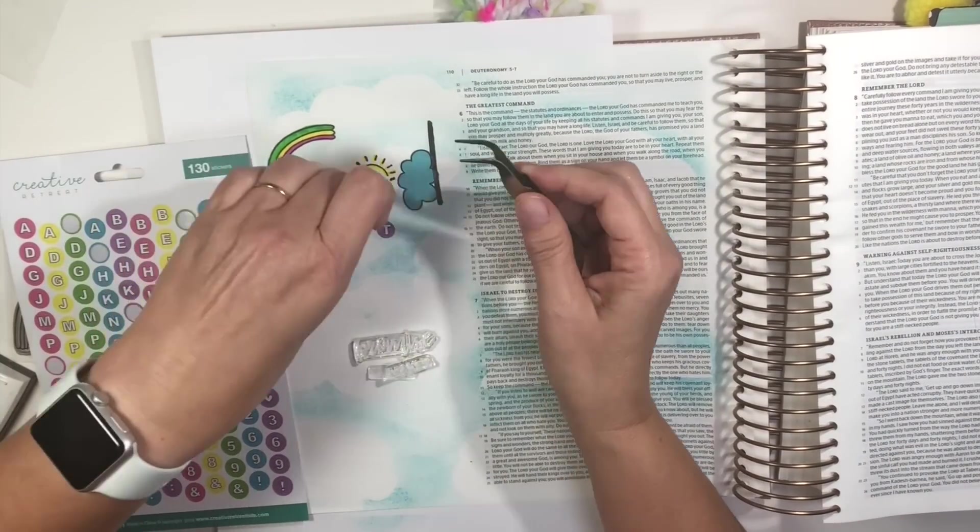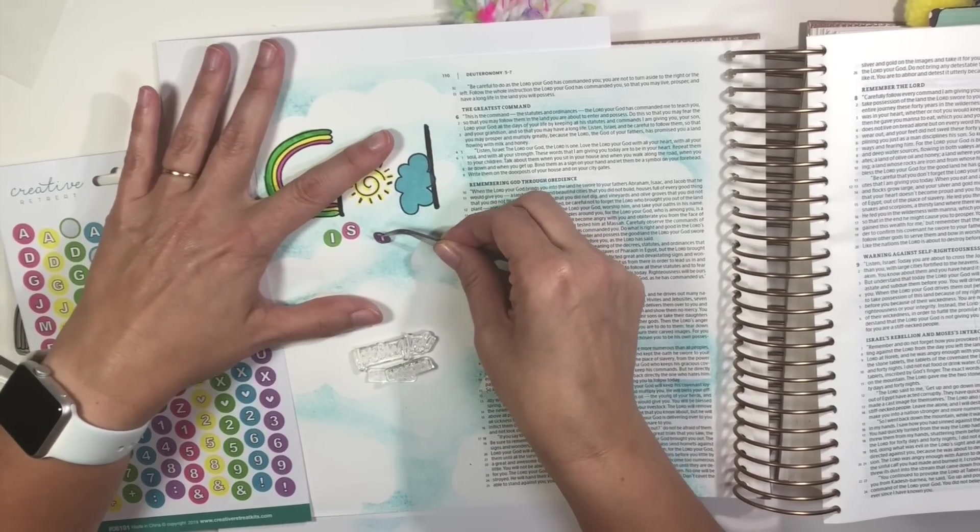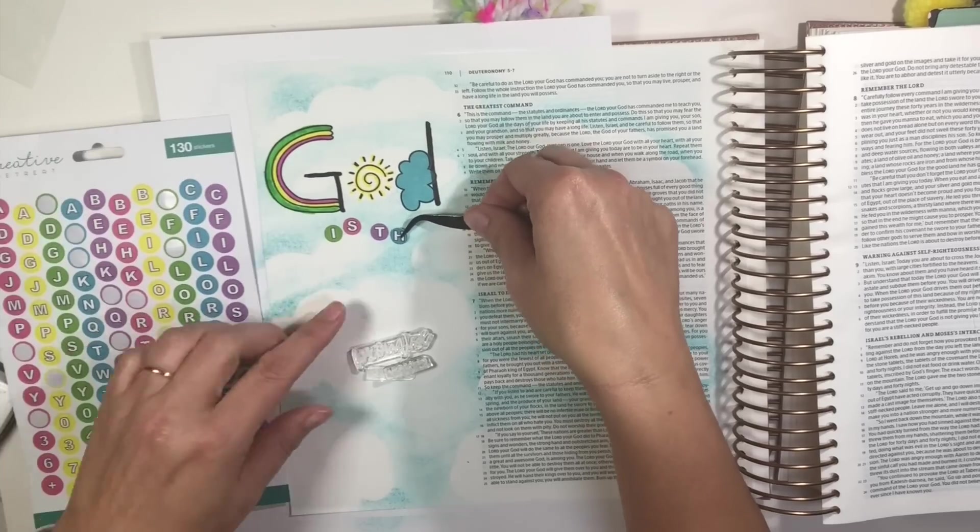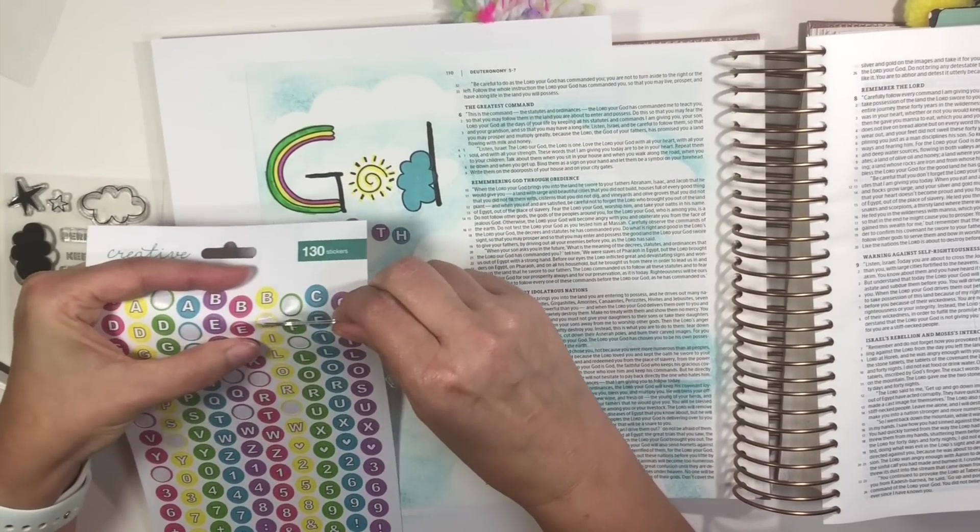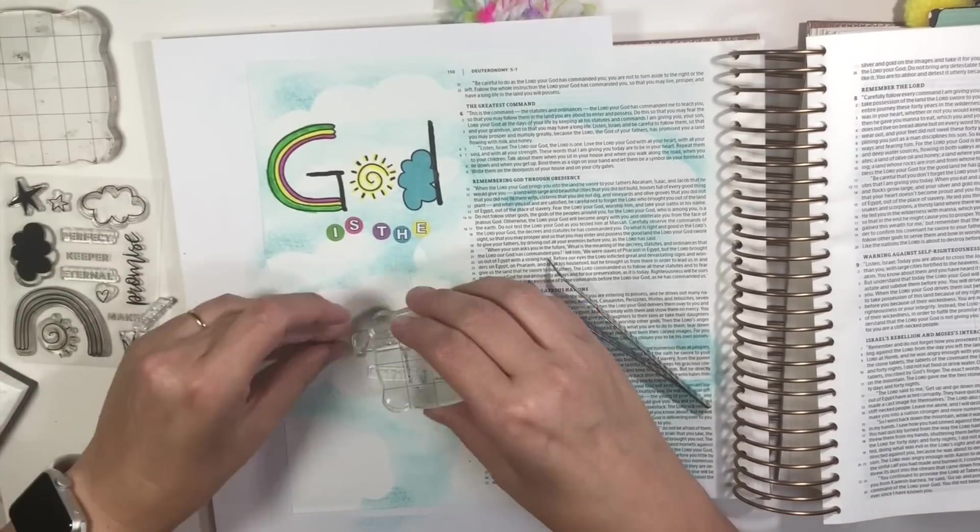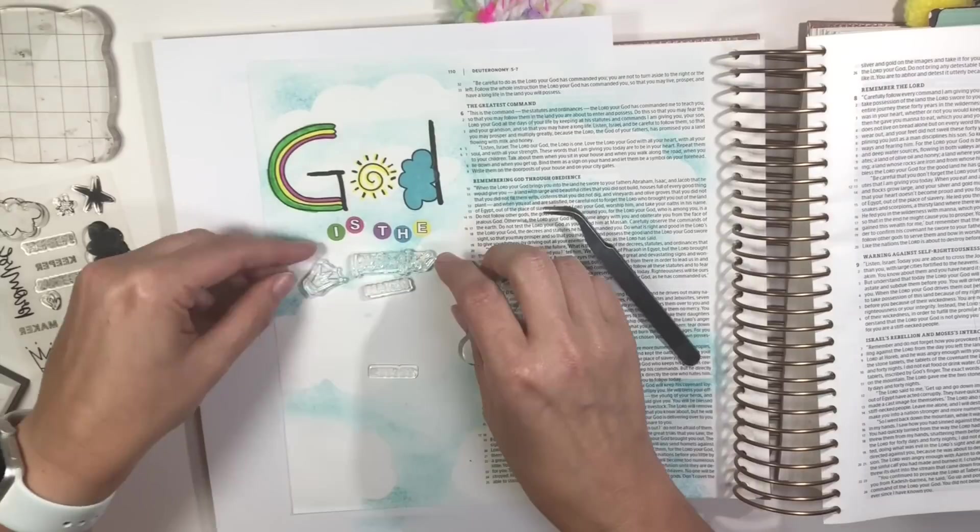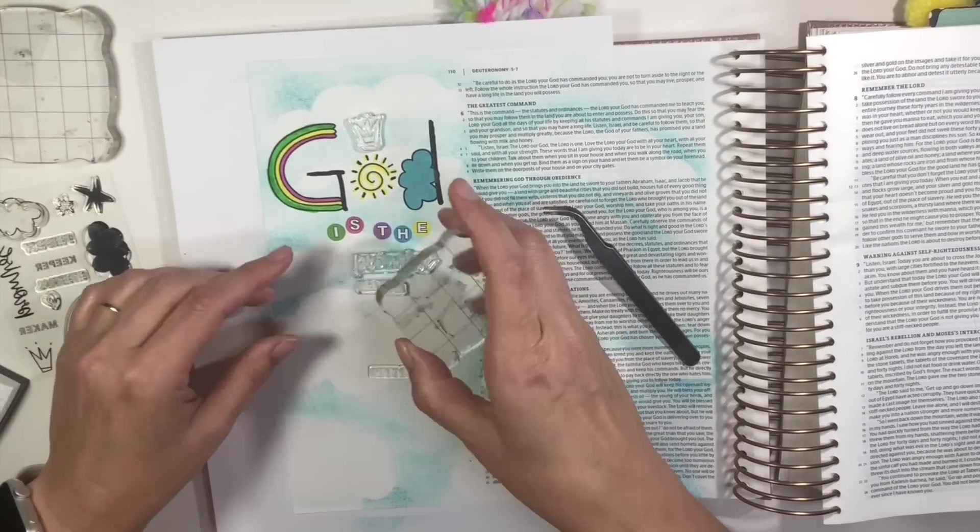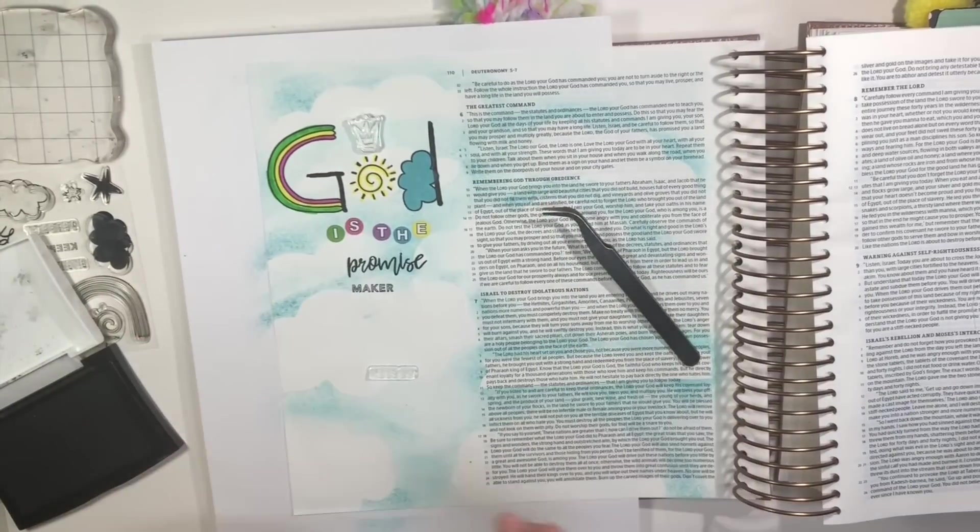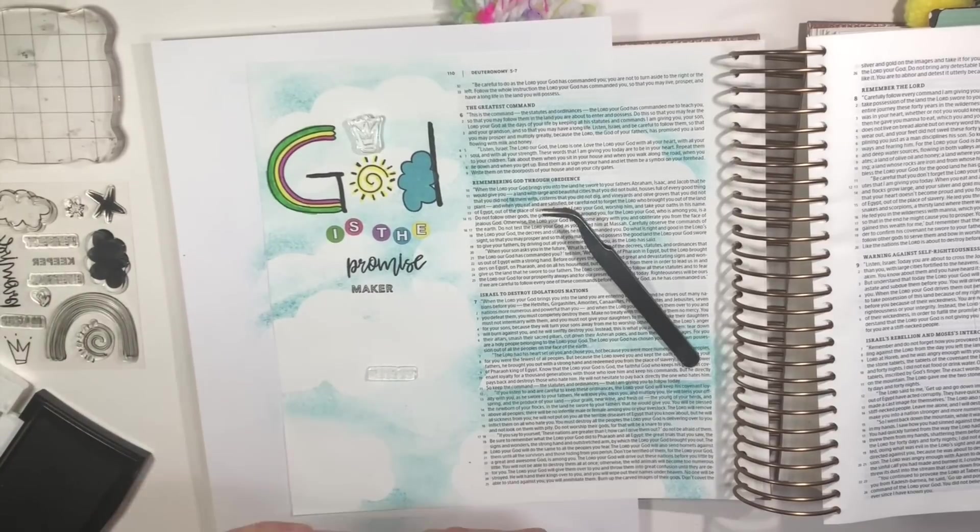Let me read this to you. But because the Lord loved you and kept the oath He swore to your fathers, He brought you out with a strong hand and redeemed you from the place of slavery, from the power of Pharaoh, king of Egypt. Know that the Lord your God is God, the faithful God, who keeps His gracious covenant loyalty for a thousand generations with those who love Him and keep His commands. So, God made a covenant and made an oath with our fathers, and then He keeps those commands and that gracious covenant for a thousand generations.